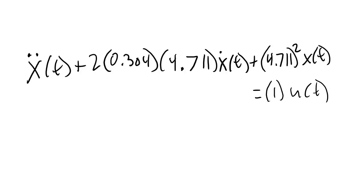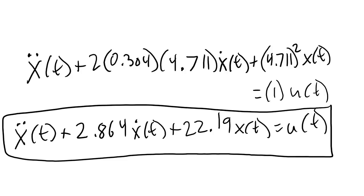Now that I've found zeta, omega_n, and the gain g, I can plug these values back into the equation for the second order system to get my complete model. The final model looks something like this — I can simplify it by calculating out these values. I could now use this model to design control gains for my system. In the next video, we'll be looking at how to do that.